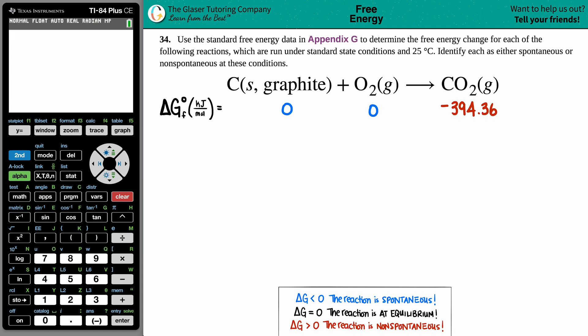Number 34: Use the standard free energy data in Appendix G to determine the free energy change for each of the following reactions, which are run under standard state conditions at 25°C. Identify each as either spontaneous or non-spontaneous. We have our balanced equation: C(graphite) + O₂(g) → CO₂(g).